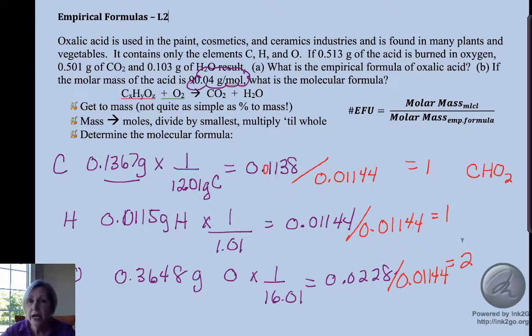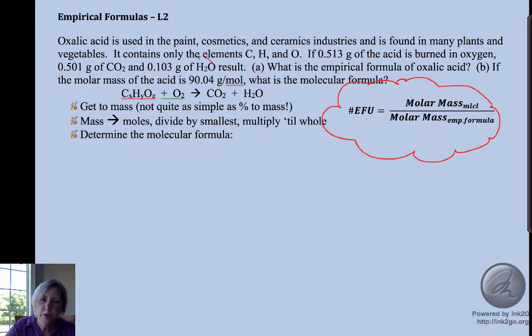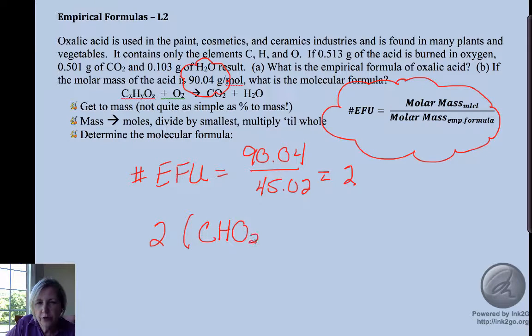All right, now the last step is to find our molecular formula. So we want to know how many of these empirical formulas fit into our molecular formula, and so that's where we're going to use this formula and that's when we'll finally use the molar mass of the whole molecule, and it's the only place. So our number of empirical formula units is equal to the whole molecule divided by each empirical formula, and that's 90.04 divided by 45.02, and so that's equal to two. So we had two of these empirical formulas, so that gives us C2H2O4.